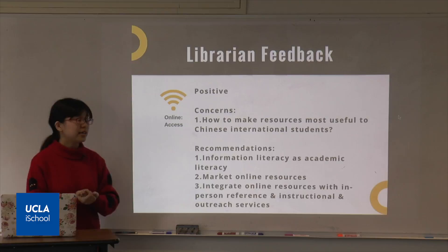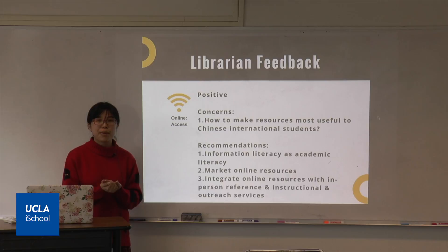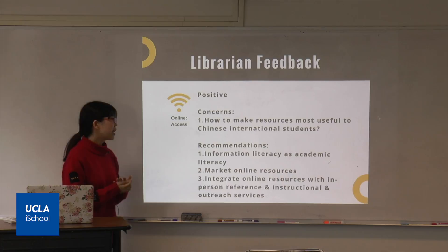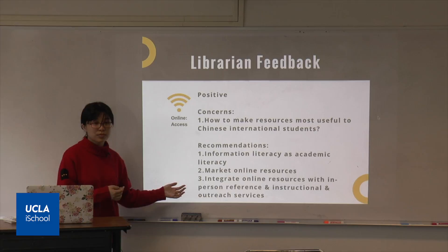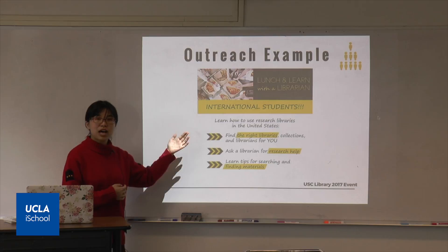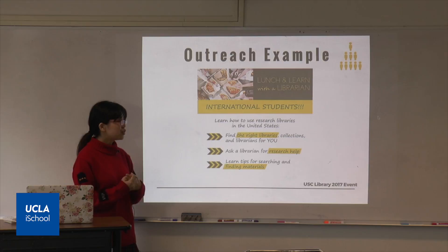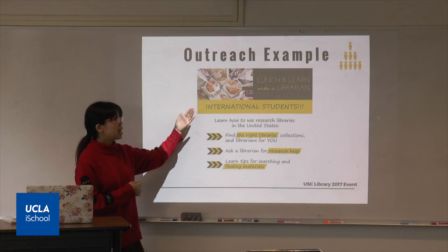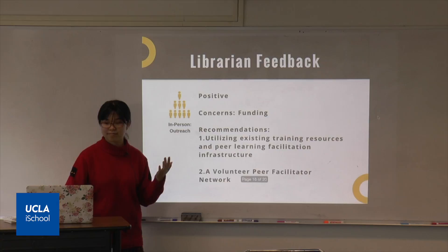To solve those problems, first, it's important to rethink information literacy as academic literacy. When creating online resources, we need to make sure the content directly speaks to international students about their special needs and understanding of the Western academic setting. Second, we need to market online resources, and the best way is to integrate them with in-person reference, consultation, and outreach services. A good example is this outreach from USC Library: a lunch and learn with a librarian for international students. In those outreach events, it's worth emphasizing that we have online resources and 24/7 chat options as well.